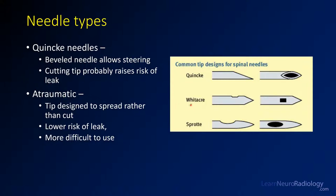Atraumatic needles such as the Whitacre and Sprotte needles have a blunter tip and the hole for CSF extraction or injection is on the side. The Whitacre has a side hole and the Sprotte has a side hole — they're designed to spread the dura as you enter. They have a lower risk of leak but are a little more challenging to use, which is why we use them less often.